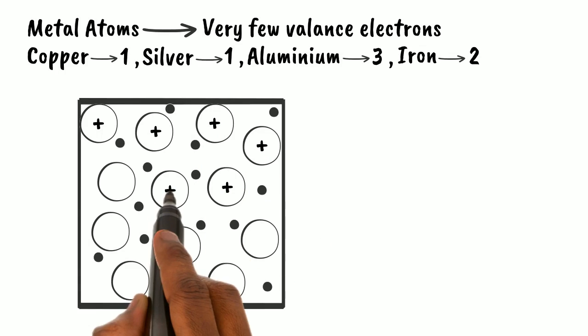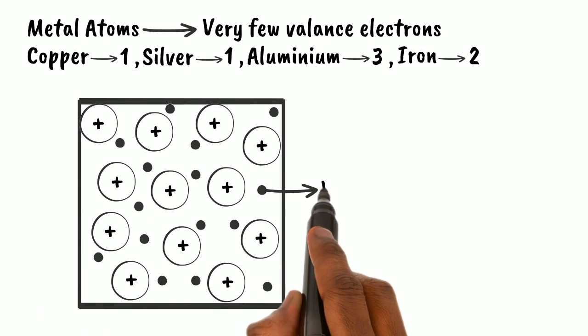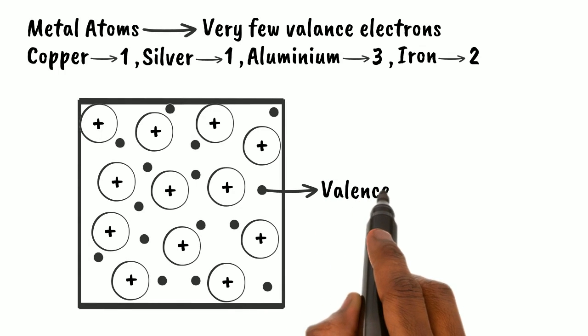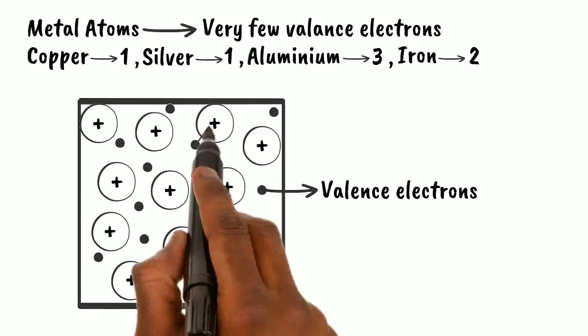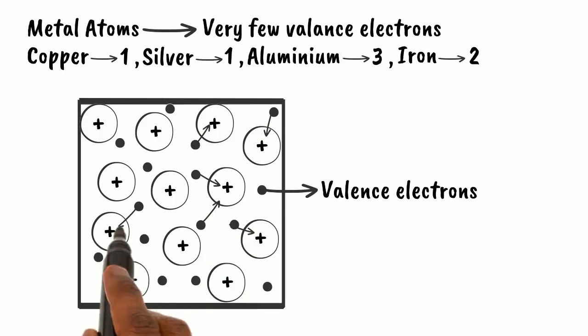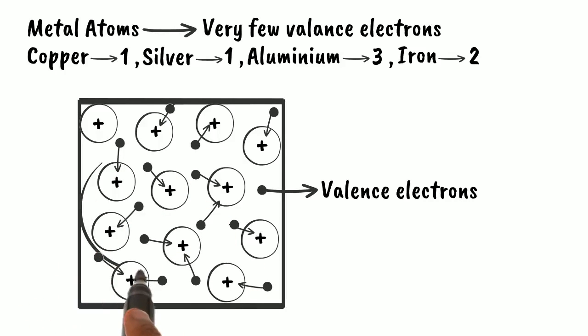The valence electrons contributed from each of the metal atoms form an electron gas in interatomic metallic structure. This negative electron gas produces a force of attraction on the positive metal ions. In this way all ions in a metal piece bounded together. This typical type of bonding is called metallic bonding.